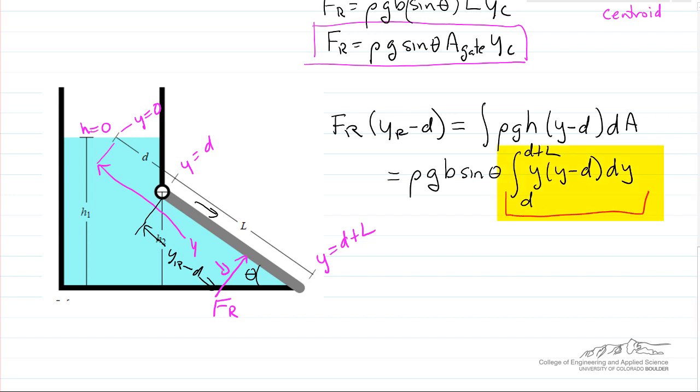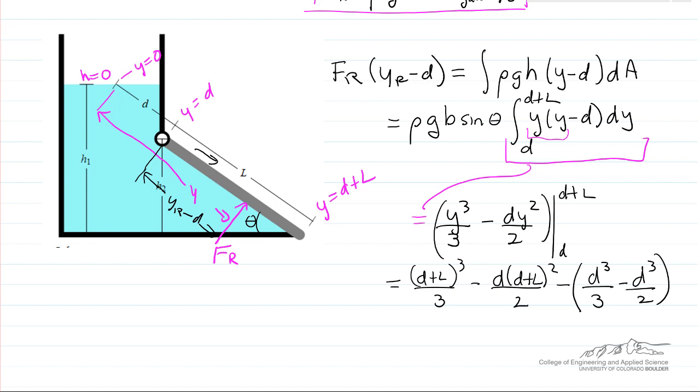For now, just look at this term. So integrating this y² term here results in y³, and integrating y with the y² term. I can now make this substitution, and then simplify. And I can simplify these terms using a common denominator.